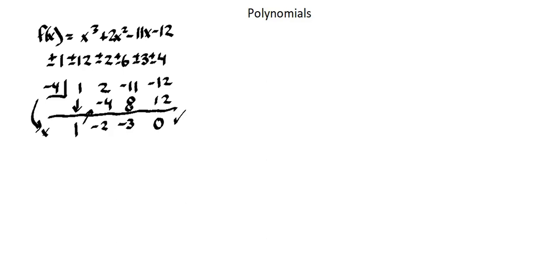Welcome back to polynomials. In the last video we began to work through the cubic function in the top left corner of the screen, f of x equals x cubed plus 2x squared minus 11x minus 12. Using synthetic division we determined that one of our zeros is negative 4, which means one of our factors is x plus 4. Now what we want to do is continue to work through and find all of the factors of this function, so that we can then identify the zeros or the solutions for the function.